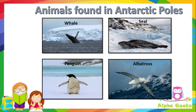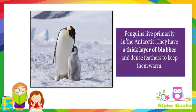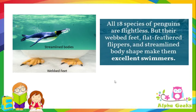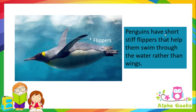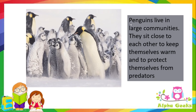Animals found in the Antarctic poles include whales, seals, penguins, and albatross. The penguin is a flightless bird but a strong swimmer found in the Antarctic regions. They have a thick layer of blubber and dense feathers to keep them warm. All 18 species of penguins are flightless, but their webbed feet and streamlined body shape make them excellent swimmers. Penguins have short stiff flippers to swim rather than wings, and they live in large communities, sitting close to each other to keep warm and protect themselves from predators.